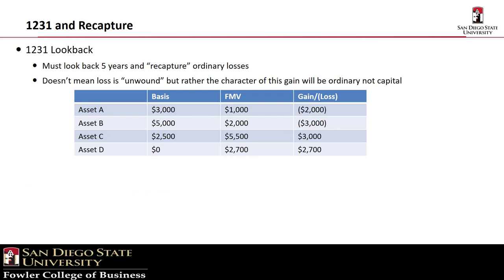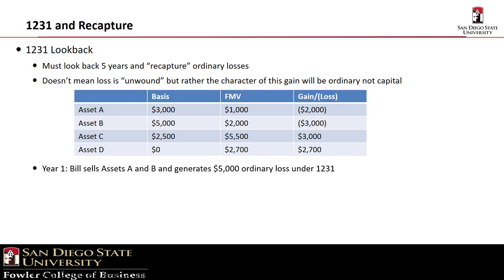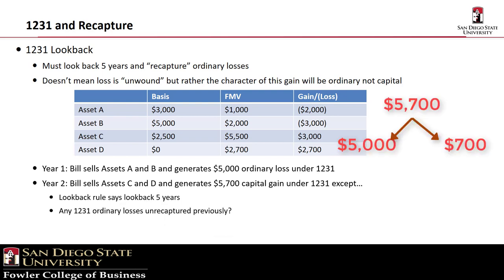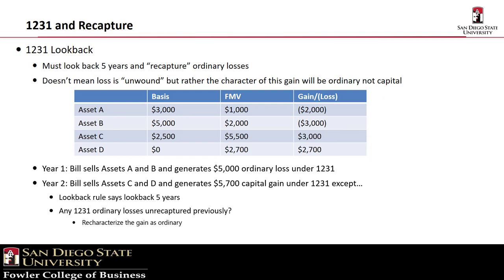Section 1231 includes a look-back rule that requires a taxpayer who has generated 1231 capital gains in a year to look back over the previous five years. If there were any Section 1231 ordinary losses, then this year's gains must be re-characterized as ordinary. Thus, in Bill's situation, in the second year when he sells all the gain property, he will have to look back and find the $5,000 of ordinary losses from last year. Therefore, he's going to have to re-characterize $5,000 of this year's gains as ordinary. The net result is an ordinary gain of $5,000 and a $700 capital gain. Remember, the total recognized gain of $5,700 does not change, only its character.